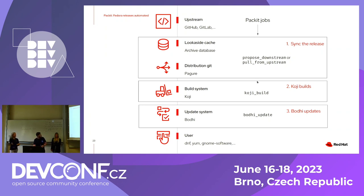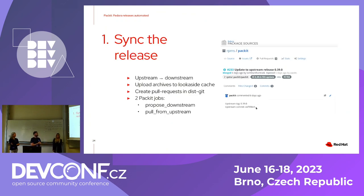I mentioned the Koji builds where we build the RPMs — we can automate that too. And we can also automate the Bodhi updates. As you could see in the PRs, for upstream to downstream we have two jobs: one is proposed downstream and the second is pull from upstream. What we do is take the archives, upload them, and create the pull requests with the needed changes.